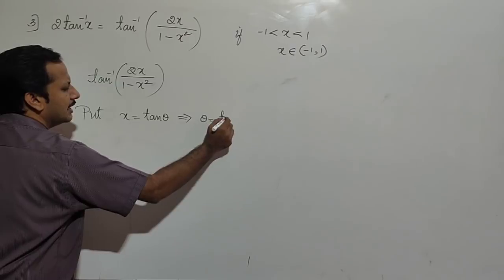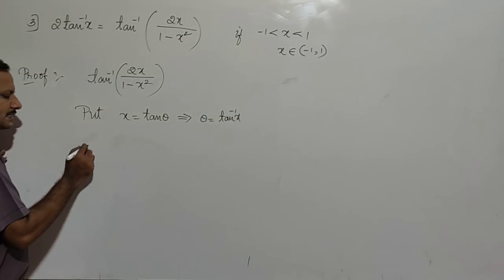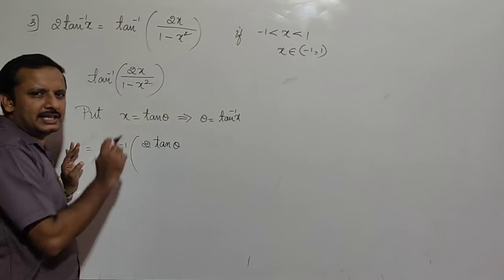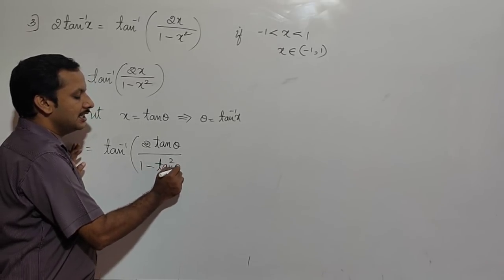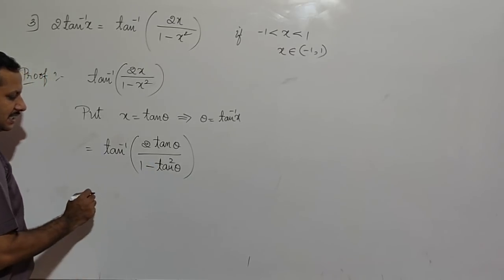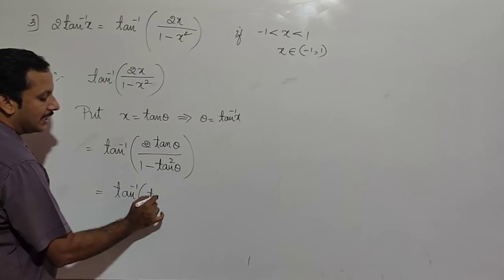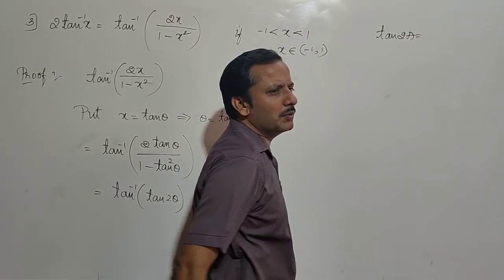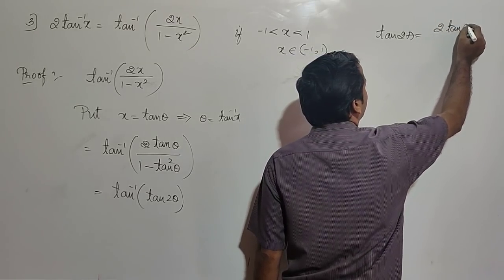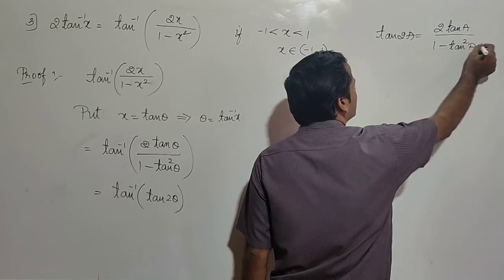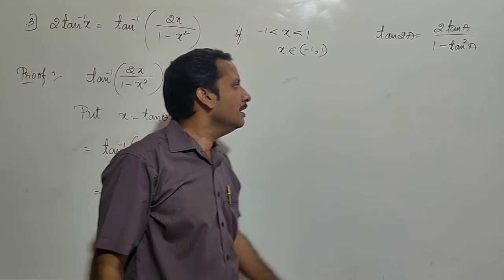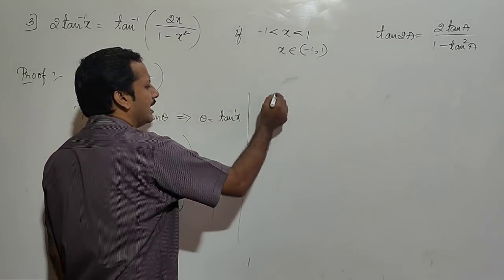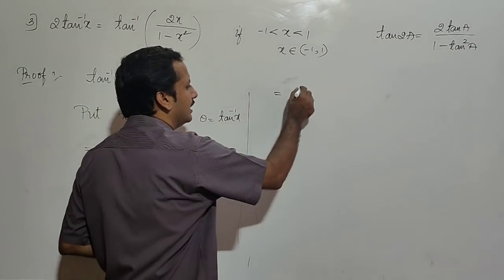When x = tan θ, then θ = tan⁻¹(x). The expression becomes tan⁻¹(2 tan θ / (1 - tan²θ)). Using the well-known formula tan 2a = 2 tan a / (1 - tan²a), we can write 2 tan θ / (1 - tan²θ) = tan 2θ. So now we have tan⁻¹(tan 2θ), and tan⁻¹(tan y) = y.